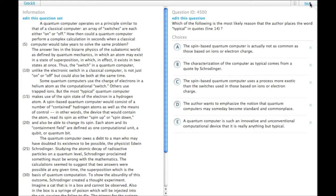I'm going to assume that you've read the passage already. Which of the following is the most likely reason that the author places the word typical in quotes in line 14? Let's reread it: but the most typical quantum computer makes use of the spin state of the electron in a hydrogen atom.